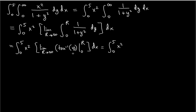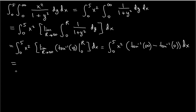Substituting back from r to infinity, this becomes the arctan of infinity minus the arctan of zero, times x squared dx from zero to five. Arctan of infinity means the angle at which the tangent is going to be infinity, and that angle is pi over two.